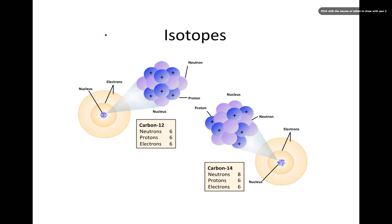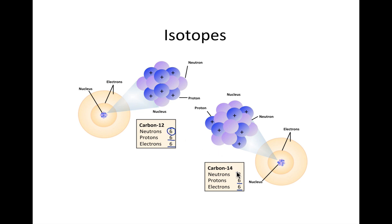Looking at a couple examples here: if we had carbon-12 and carbon-14, the number of protons — if you look at carbon on the periodic table and look at that atomic number — the protons and electrons are still the same. It's six for carbon. Carbon-14 also has six protons and six electrons. The only difference is carbon-12 only has six neutrons, while carbon-14 has eight neutrons. So you're just changing the number of neutrons.